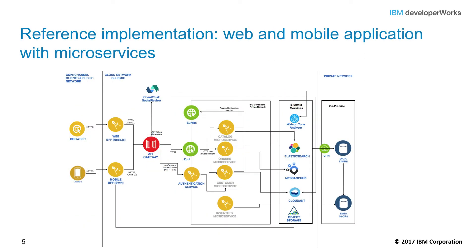Let's move on to a reference implementation. The diagram displays actual services and application components with specific functions. The architecture center includes code examples and deployable projects for reference implementations. The application is a simple storefront shopping application that displays a catalog of antique computing devices where users can buy and add review comments. It has web and mobile interfaces. Both the mobile app and web app rely on separate BFF, or back-end for front-end, services to interact with the back-end data. The example code contains both an Angular-based web application and a native iOS application.